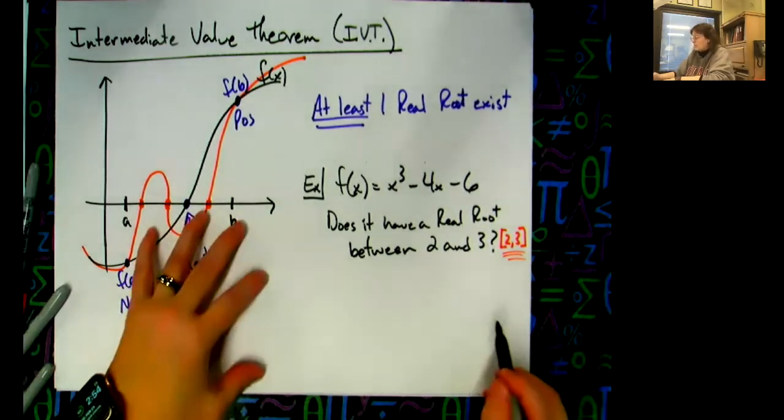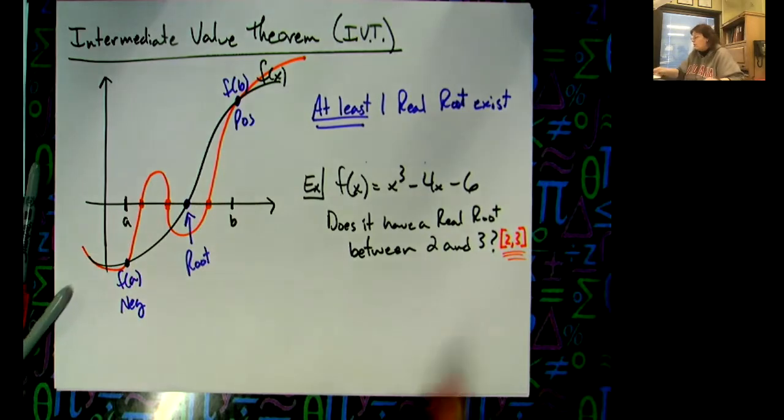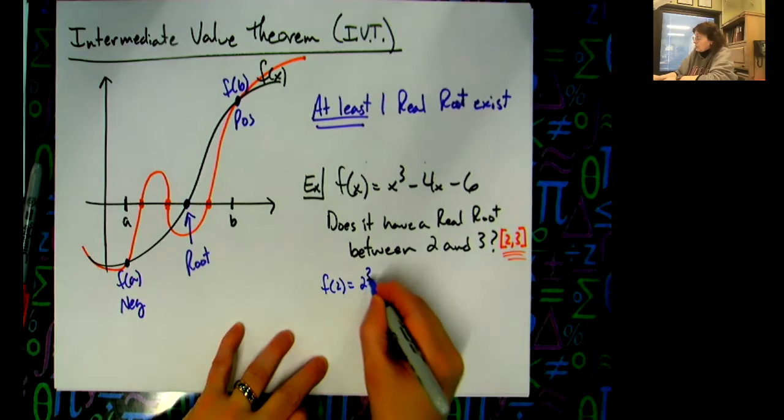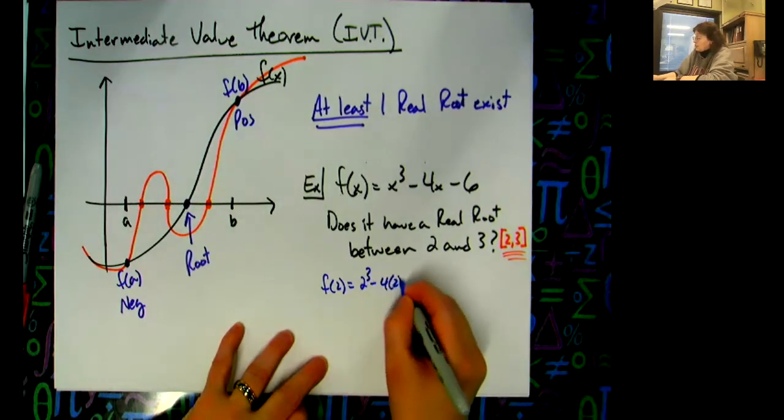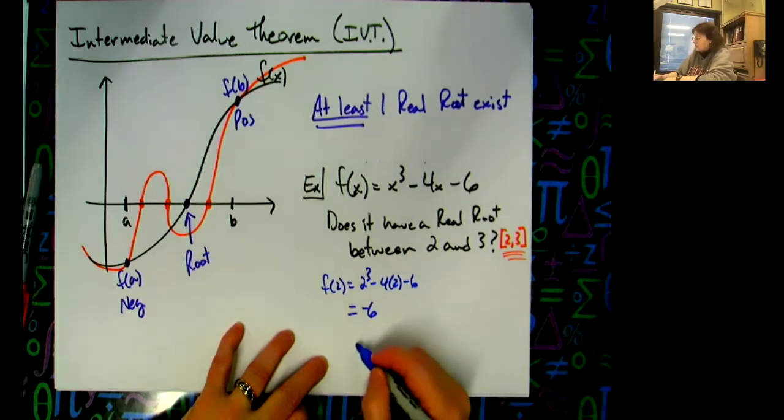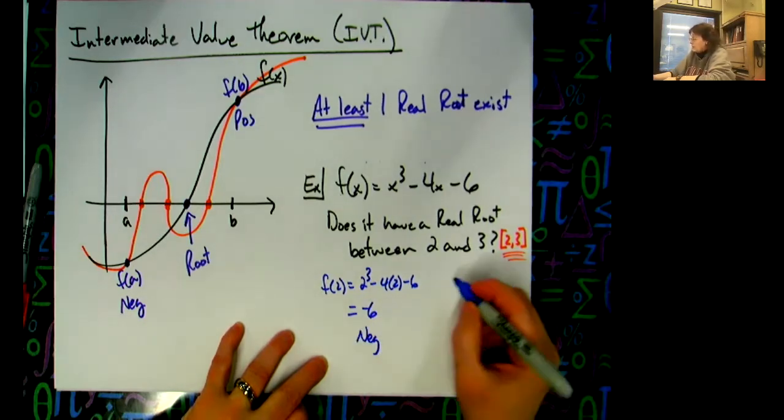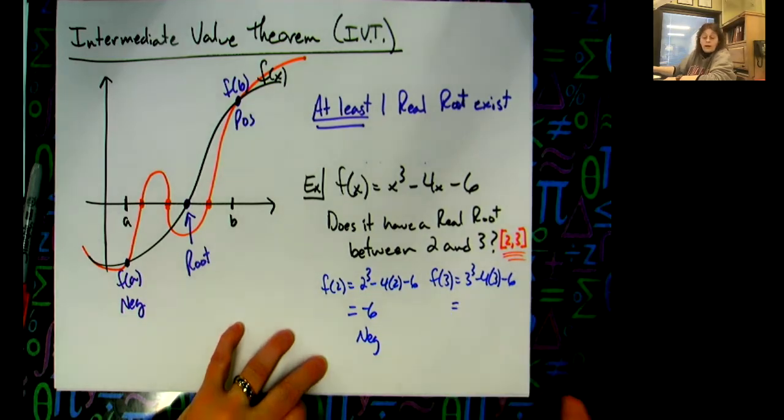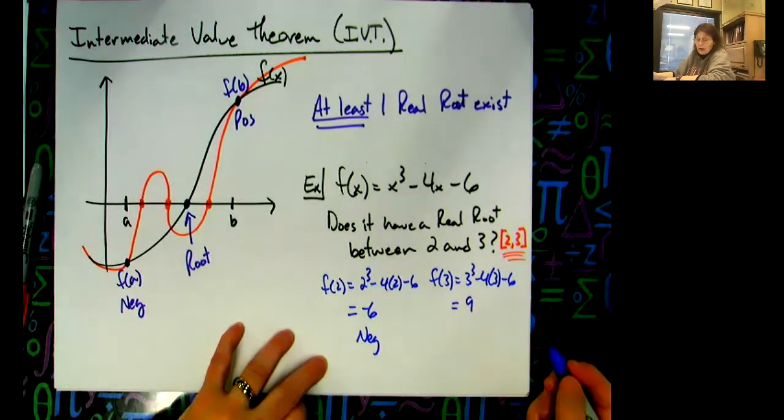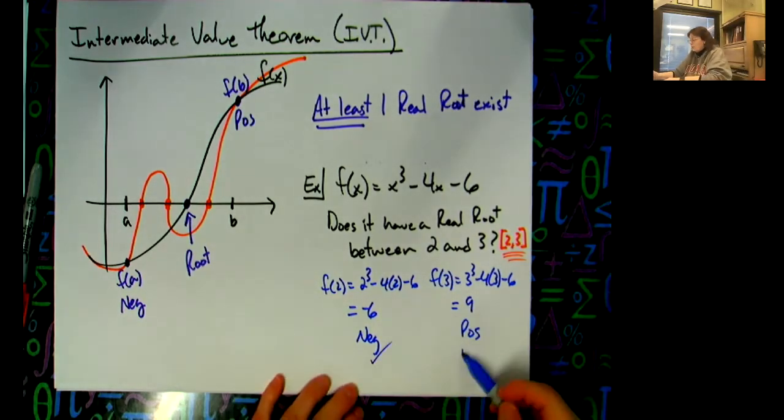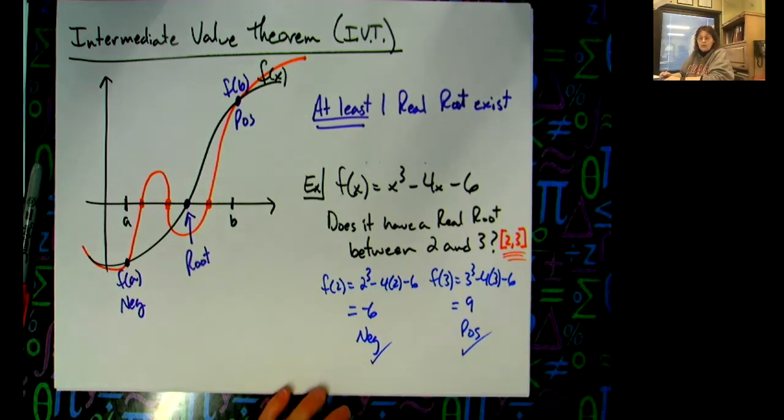So basically what you're going to do is you're going to plug 2 into that function. So 2 to the third minus 4 times 2 minus 6. You're going to work that out and I believe it's negative 6, which gives you a negative value. Then you're going to plug in f(3), so 3 to the third minus 4 times 3 minus 6. You're going to work that out, I believe it's 9, that's a positive value. So as long as I get one negative and one positive, does it have a root? Yes.